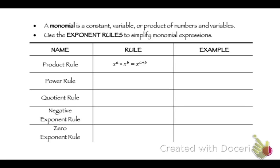First is the product rule. Say you have x to the a times x to the b — that's the same as x to the a plus b. Product multiplication goes with addition. You can think of it as multiplication being repeated addition, so that's where it comes from. An example: 2 to the 3rd times 2 to the 2nd equals 2 to the 3 plus 2 power, which is 2 to the 5th.